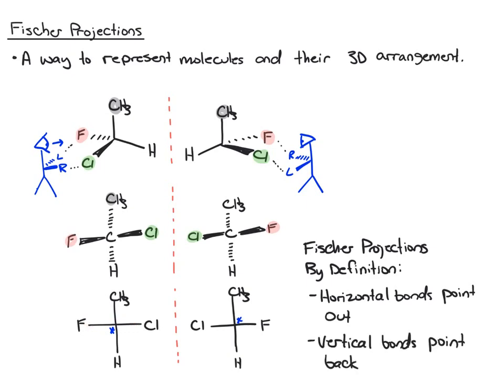Then the opposite is the case for the vertical bonds. The vertical bonds, by definition, point back. So when you see the Fischer projection, you know all the vertical bonds are pointed backwards.